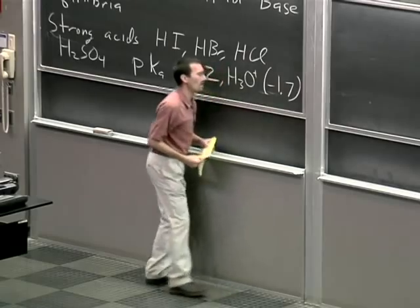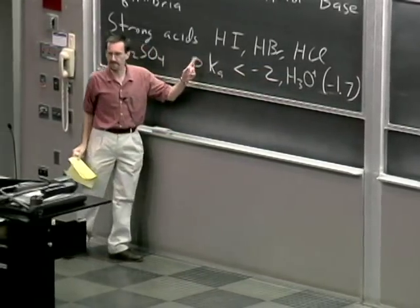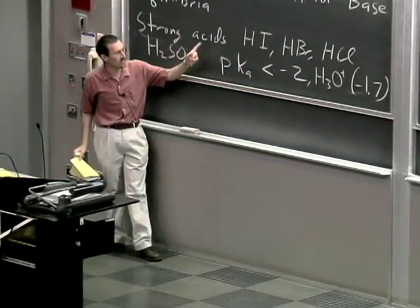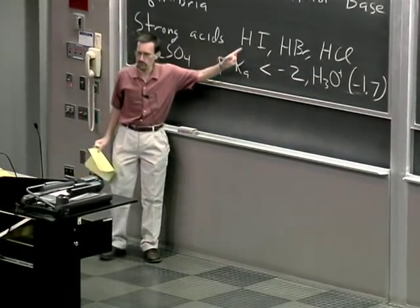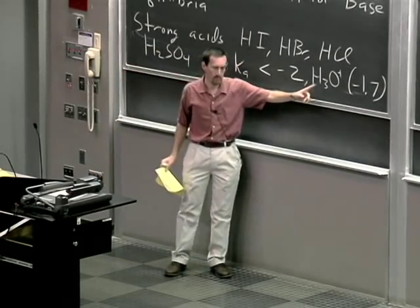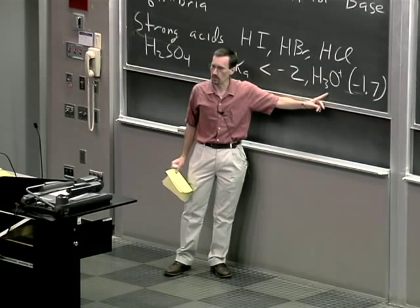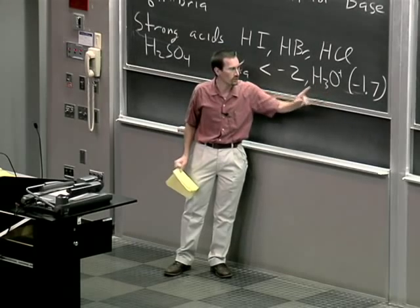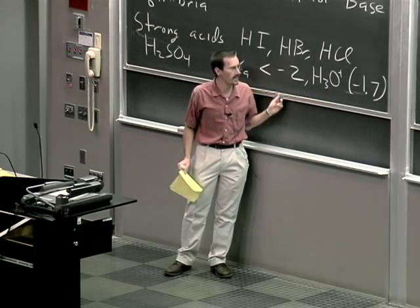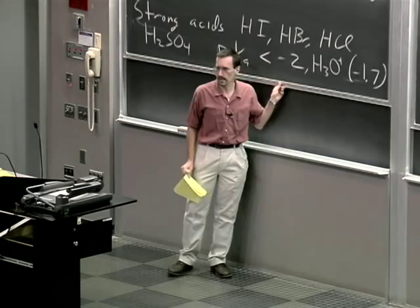The pKa of H3O+ is negative 1.7. This is what's often referred to as the leveling effect. When you dissolve a very strong acid in a solvent where the protonated version has a larger pKa, it fully dissociates.